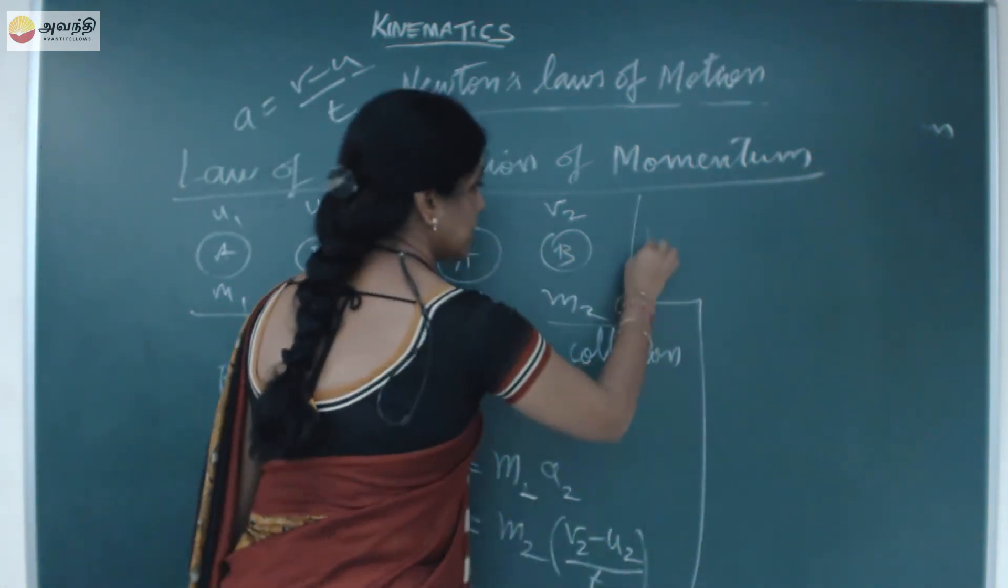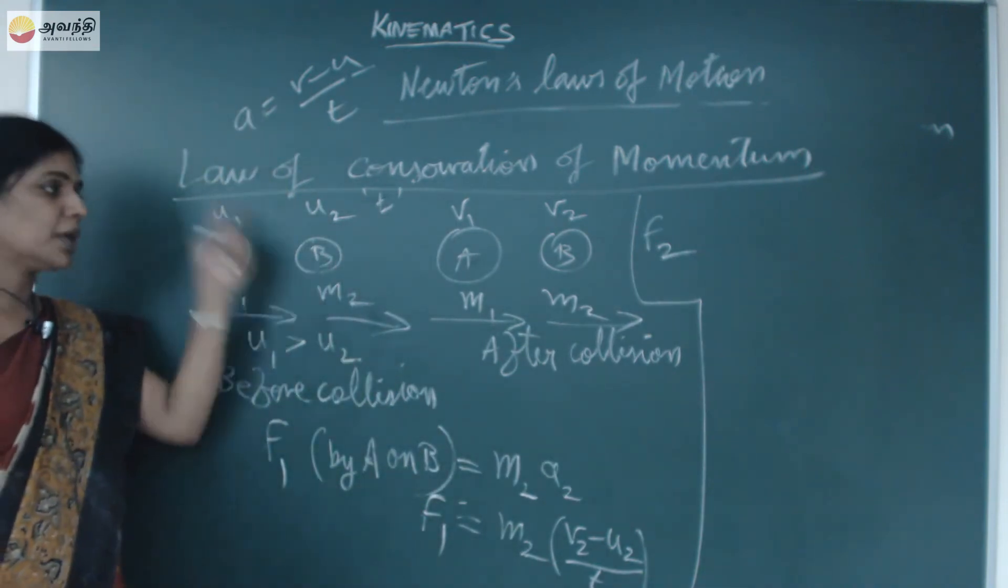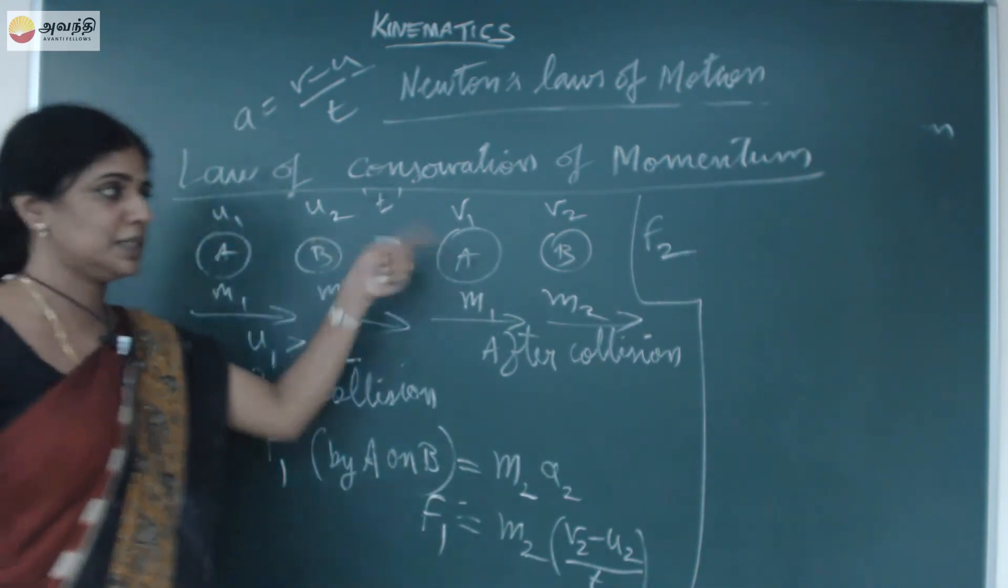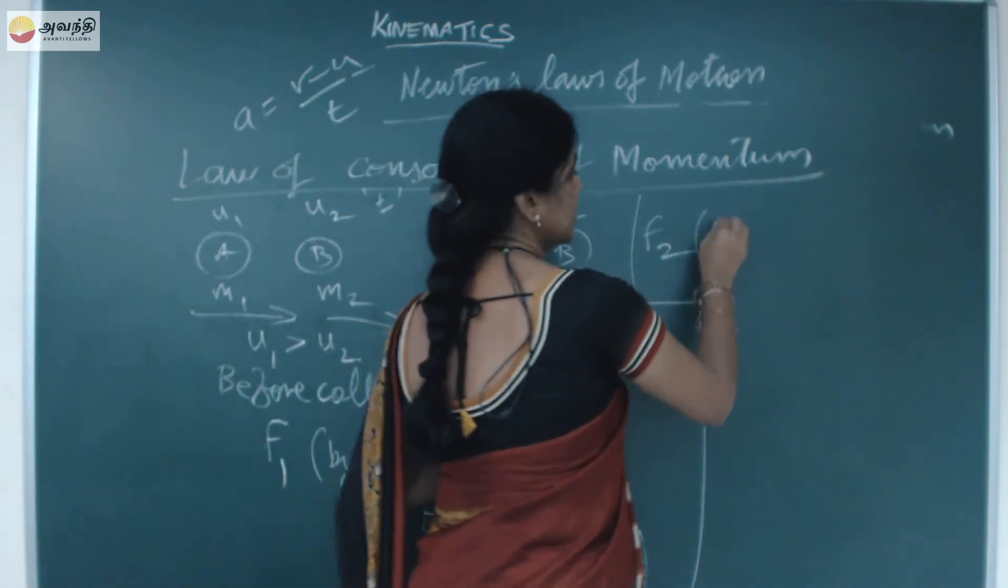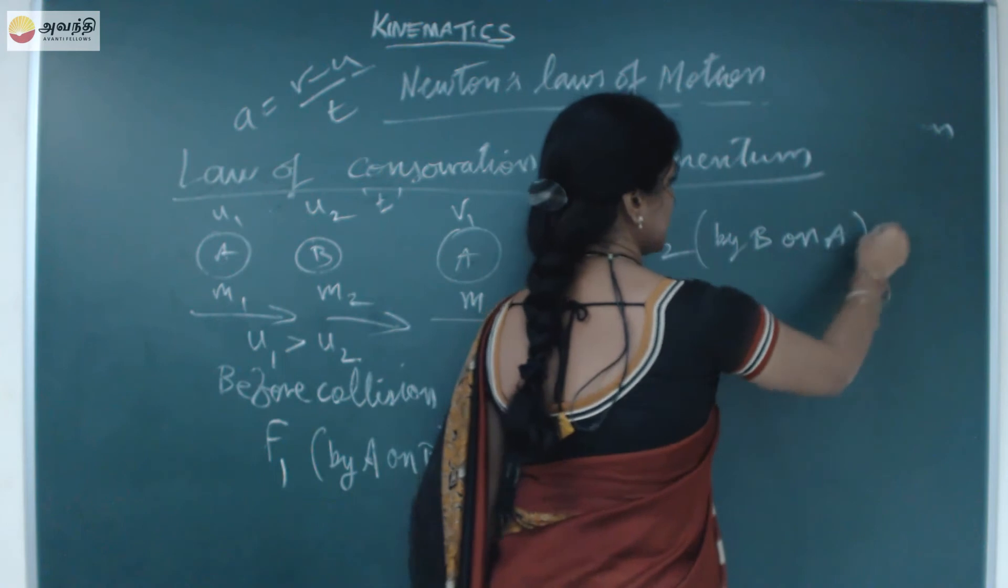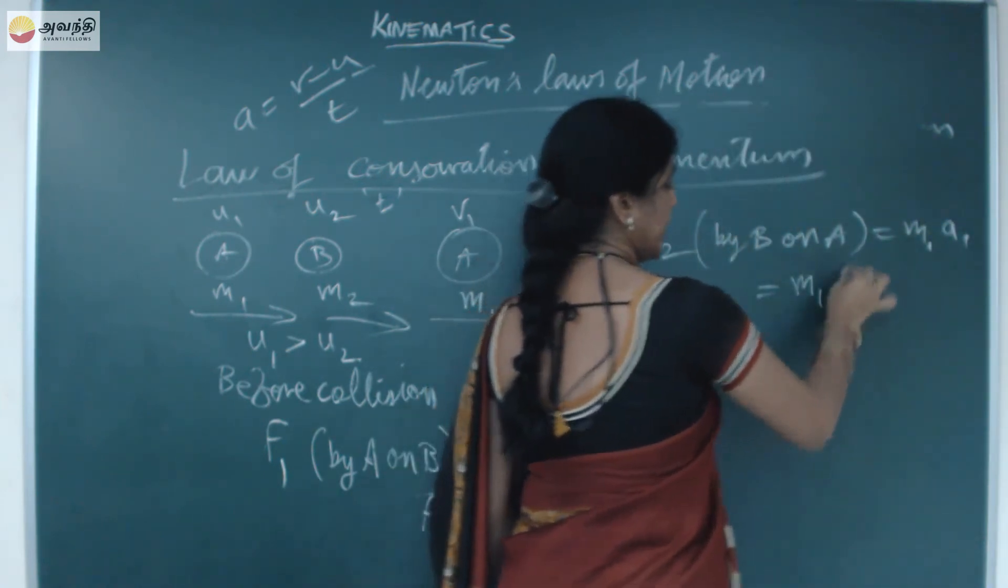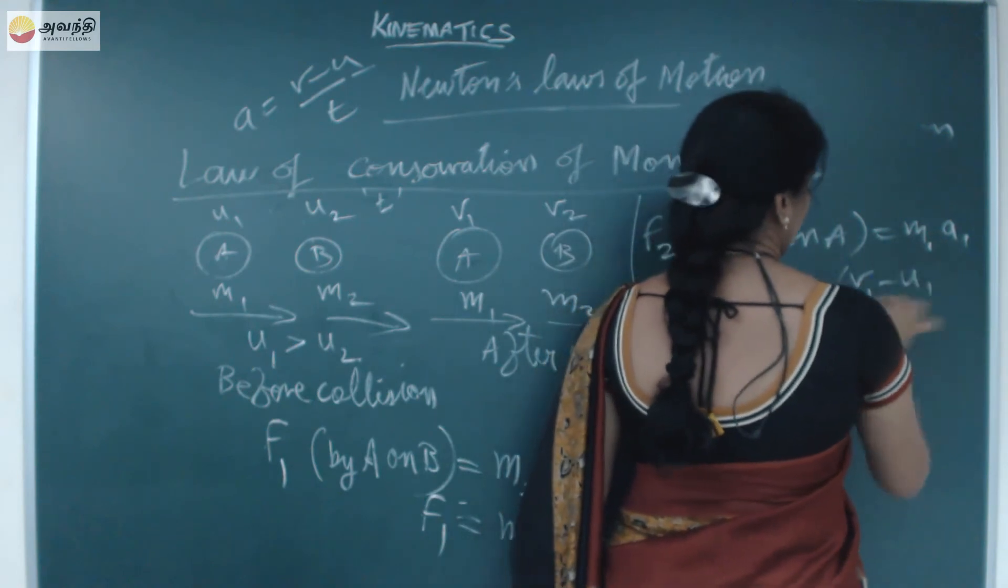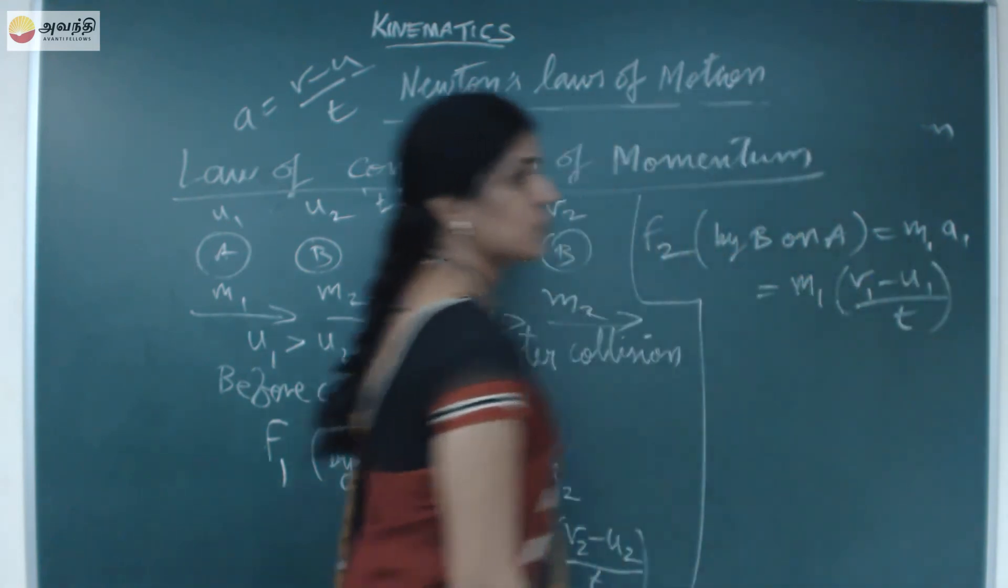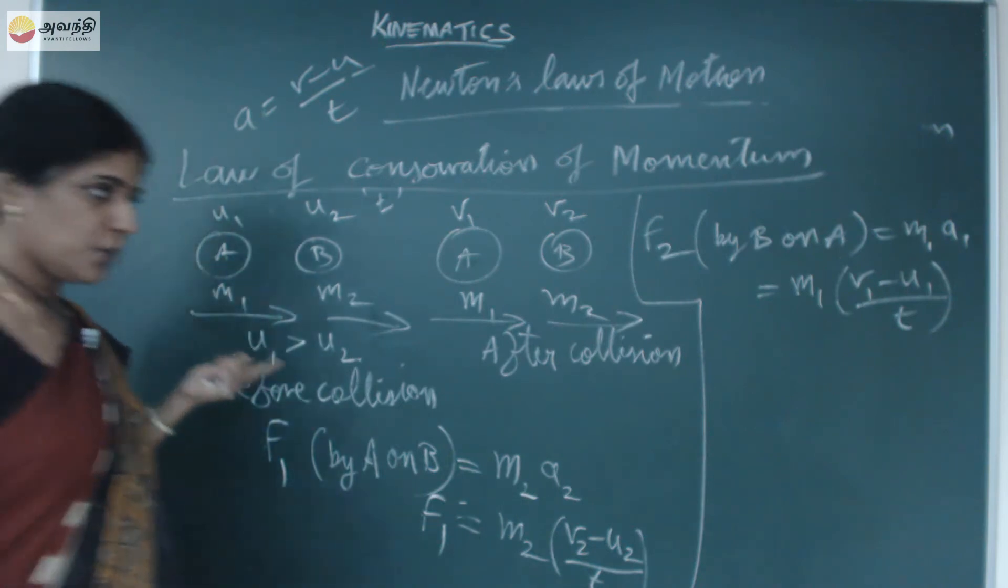Similarly, I can also write what is the force exerted by object B. The force exerted by B on A is F2. F2 is by B on A. It is given by m1. F2 equals m1 into v1 minus u1 by T. By Newton's third law.